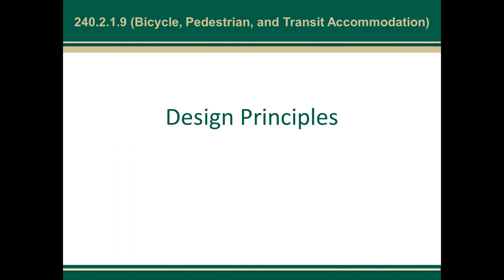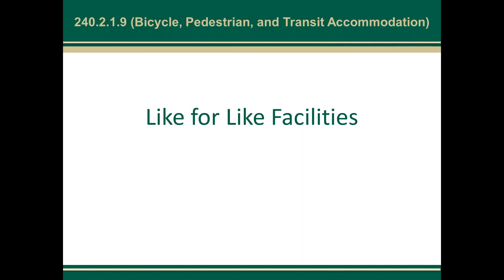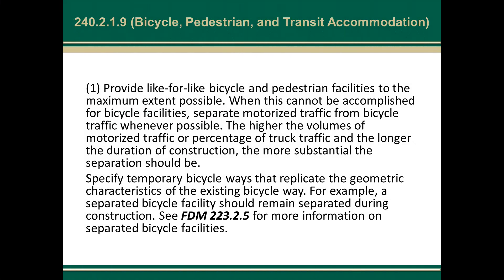One of the design principles is providing like-for-like facilities: provide like-for-like bicycle and pedestrian facilities to the maximum extent possible. When this cannot be accomplished for bicycle facilities, separate motorized traffic from bicycle traffic whenever possible. The higher the volumes of motorized traffic or percentage of truck traffic and the longer the duration of construction, the more substantial the separation should be. Specify temporary bicycle ways that replicate the geometric characteristics of the existing bicycle way — for example, a separate bicycle facility should remain separated during construction. See FDM 223.2.5 for more information.